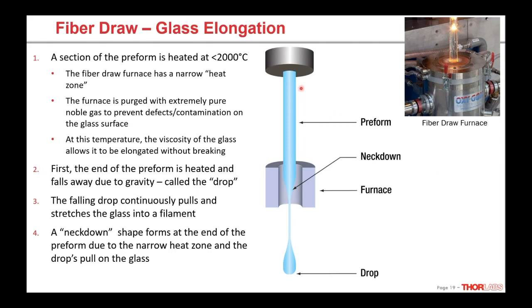To start, we put the preform into the furnace. The end gets heated up, softens, and falls away due to gravity — that's called the drop — so we get this large glob of glass. Behind that the glass is pulled out into a nice filament shape. The shape the glass has in that heat zone is called the neck-down, which forms due to the heat and the pull of the drop. I have a video here showing the drop after it's been heated up falling away from the preform, and you'll be able to see the fiber filament being pulled behind it.